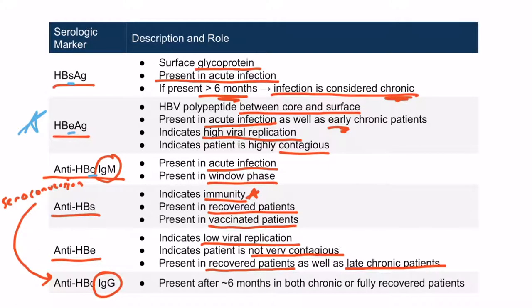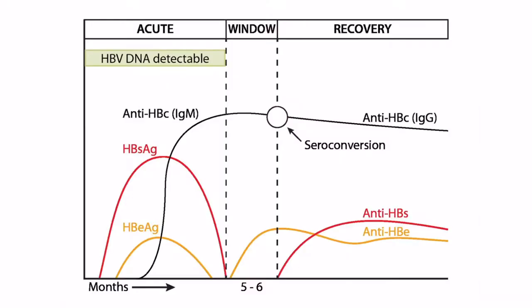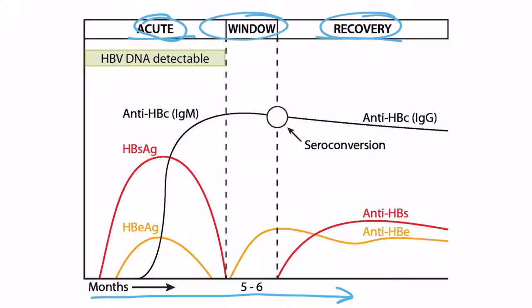The IgG antibodies formed against the core present after seroconversion, when the IgG antibodies replace the IgM antibodies — after about six months in both chronic or fully recovered patients. This diagram shows the level of serologic markers over time, specifically referring to someone who clears and recovers from the infection. This diagram does not depict patients who experience chronic infection. Notice that between the acute phase and the recovery phase, there is a window phase — those are the three stages.